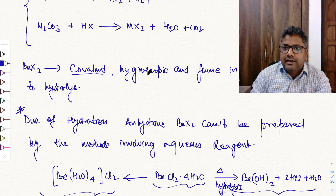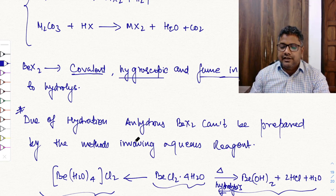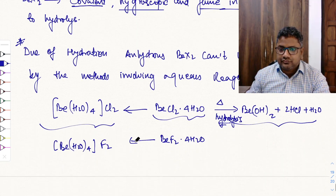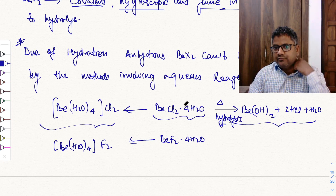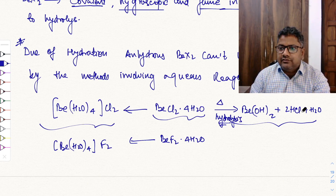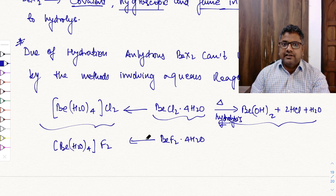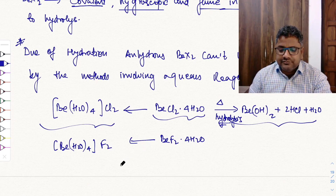So beryllium halides are covalent and hygroscopic and fume in air. In air, moisture causes hydrolysis, and you get HCl fumes — HCl gas appears in the form of fume. Therefore some other methods are needed for the preparation of anhydrous beryllium halides.